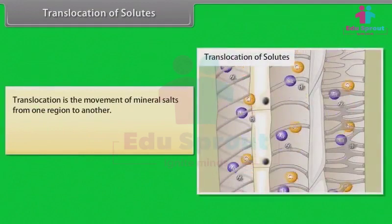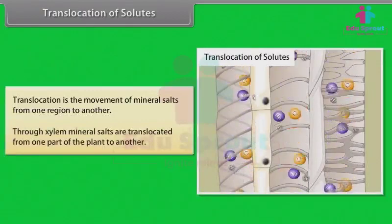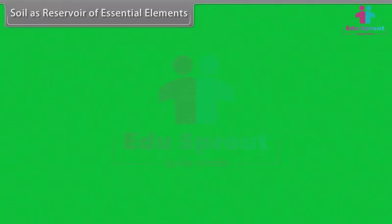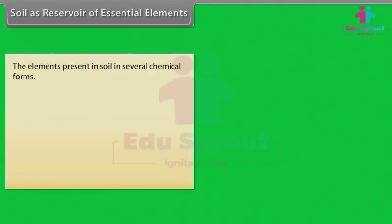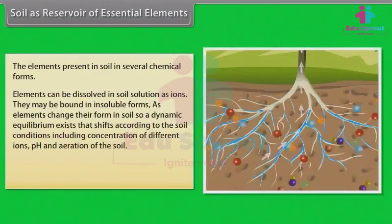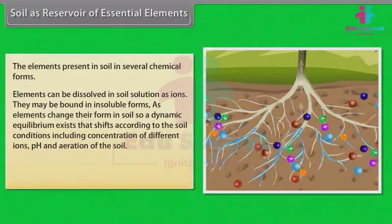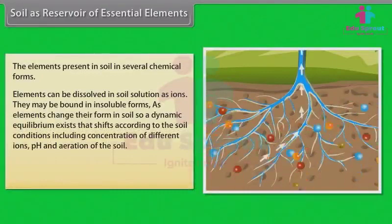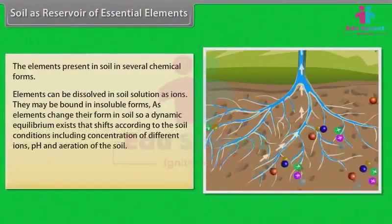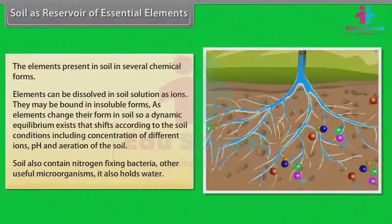Translocation is the movement of mineral salts from one region to another. Through the xylem, mineral salts are translocated from one part of the plant to another. The soil serves as a reservoir of essential elements. Elements present in the soil exist in several chemical forms — dissolved in soil solution as ions or bound in insoluble forms. A dynamic equilibrium exists that shifts according to soil conditions, including concentration of different ions, pH, and aeration. Soil also contains nitrogen-fixing bacteria and other useful microorganisms, and holds water.